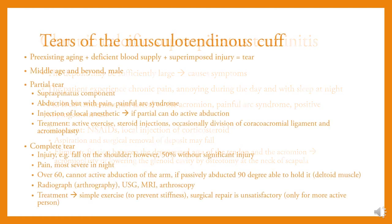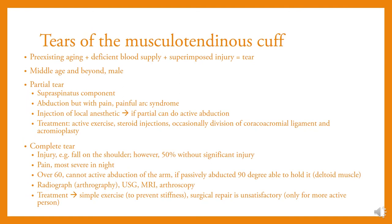Tears of the musculotendinous cuff result from pre-existing aging with diminished blood supply and superimposed injury, occurring in middle age and beyond, usually in males. Partial tear of the supraspinatus component allows abduction but with pain and positive painful arc syndrome; treatment with active exercise, steroid injection, and occasionally division of the coracoacromial ligament and acromioplasty. In complete tear, often due to injury such as a fall on the shoulder, 50% occur without significant injury. Pain is more severe at night; patients over 60 cannot actively abduct the arm, but if passively abducted to 90 degrees, they are able to hold it. Investigations include radiograph, ultrasound, MRI, and arthroscopy; treatment with simple exercise and surgical repair, though surgical repair is often unsatisfactory.